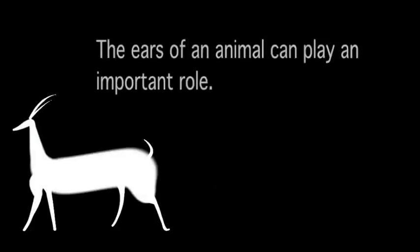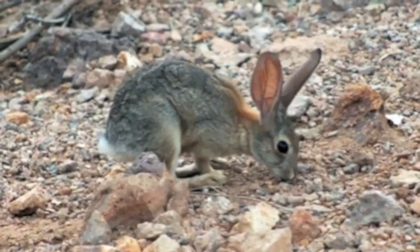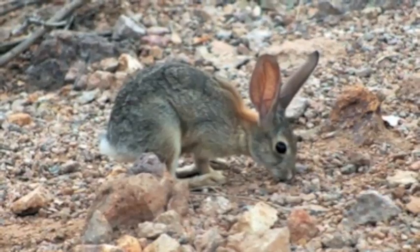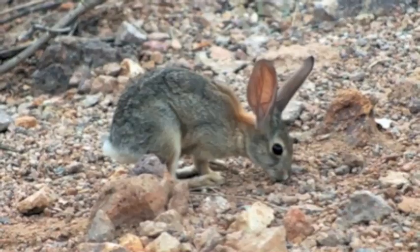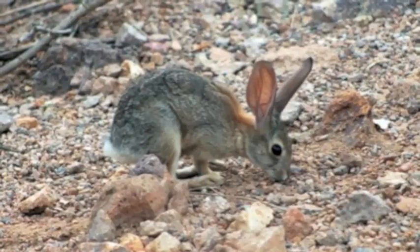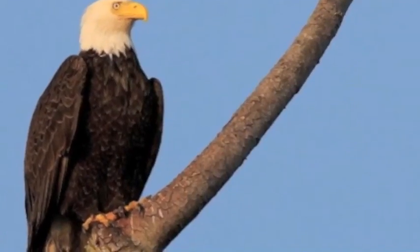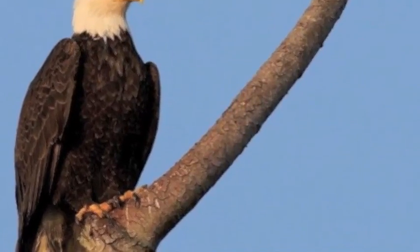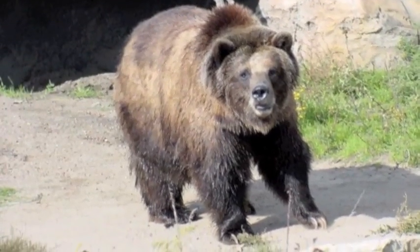Polar bears and otters also have the adaptation of webbed feet for swimming. The ears of animals can play an important role in their lives. For example, think of the desert hare, which not only uses its ears to listen out for danger, but to also cool off in its hot desert home. Both eagles and bears use their dangerous-looking claws and talons to catch and manipulate their food, as well as for sitting on trees.